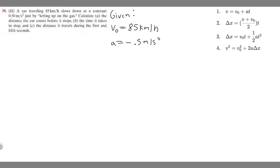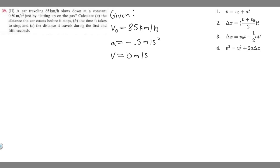For Part A, we're finding the distance before the car stops. Since we're asked when it stops, the final velocity is 0 — because when something is stopped, it's traveling at 0 meters per second. So let's go ahead and solve for Part A.